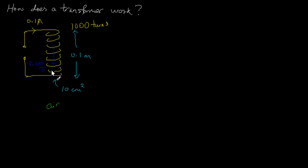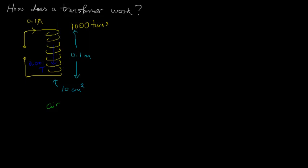So, with this starting point, I'm going to work out what happens to the coil — to the magnetic field, current, and voltages. What would happen if I start from 0 ampere and increase the current to 0.1 ampere? Let's think about what happens if I do this.